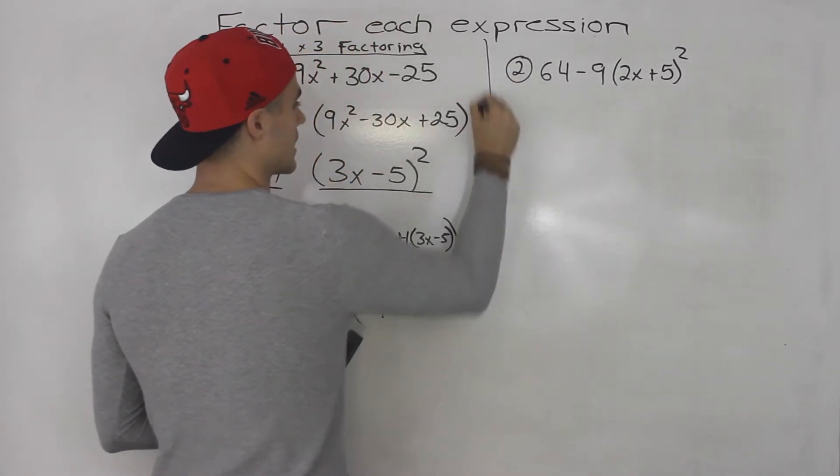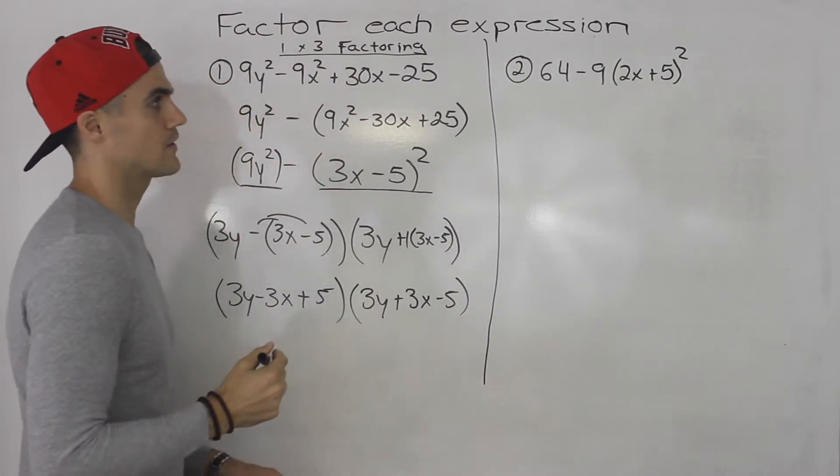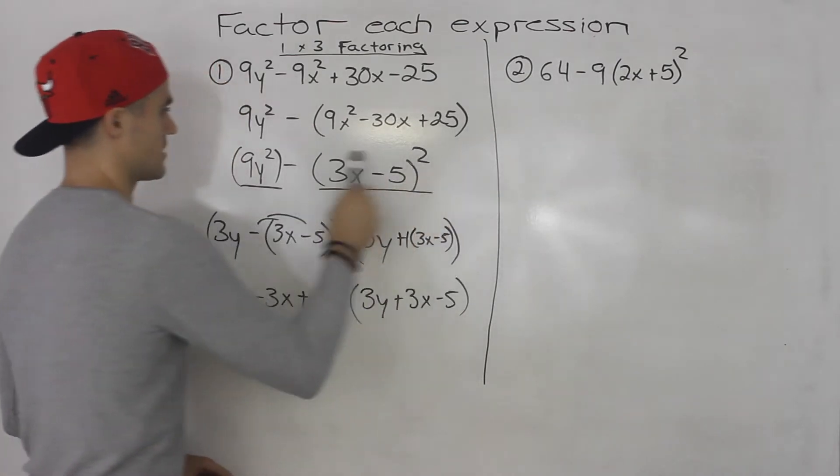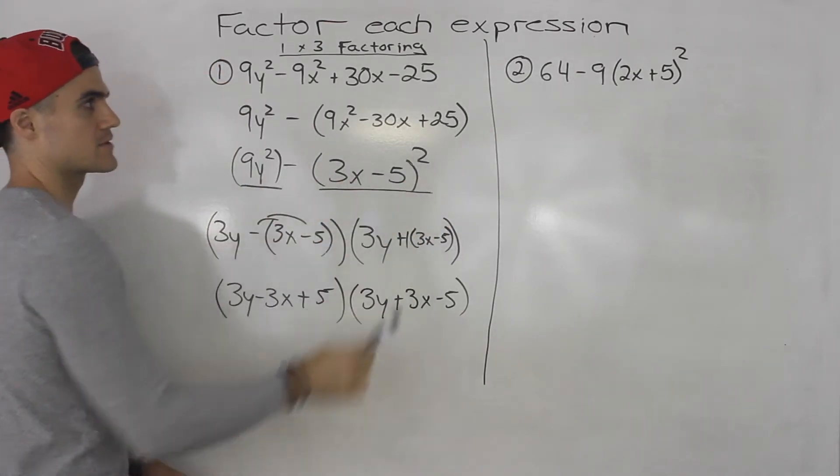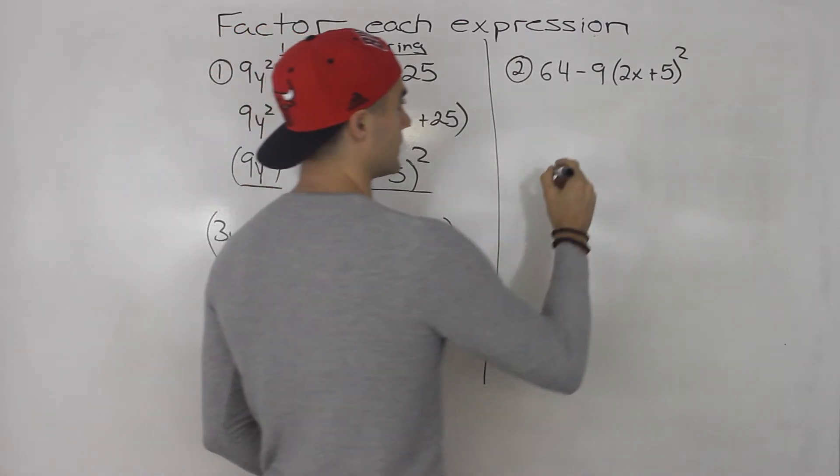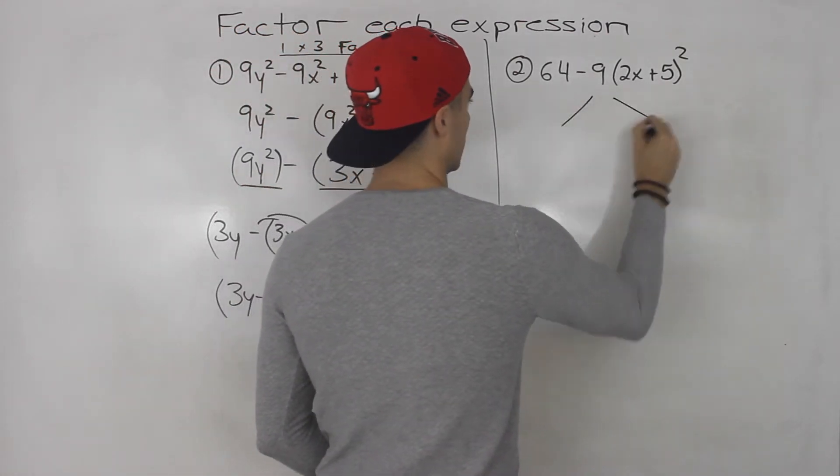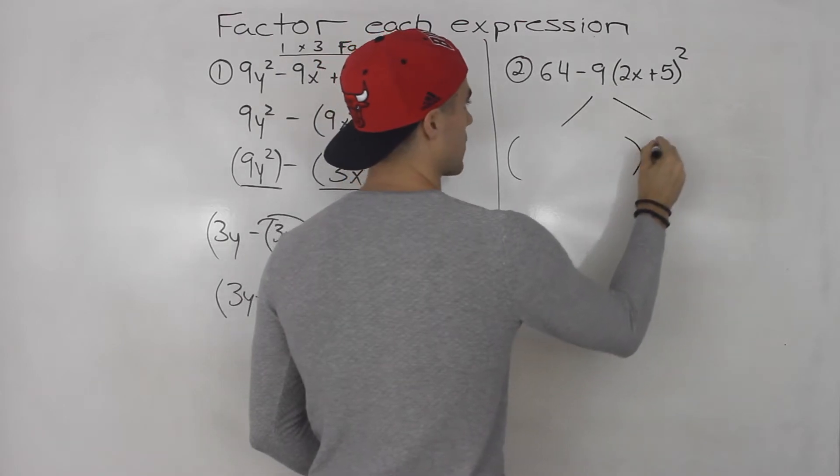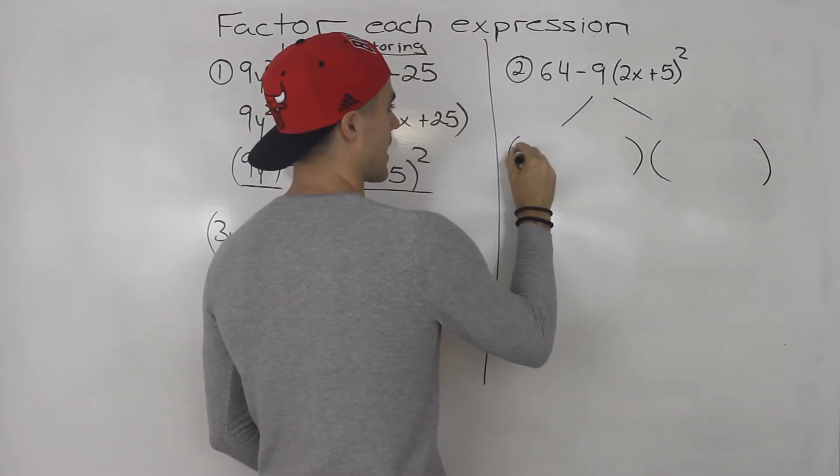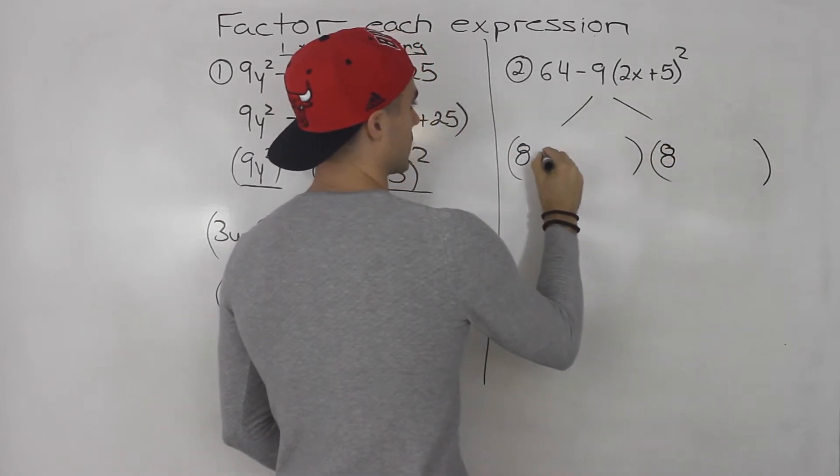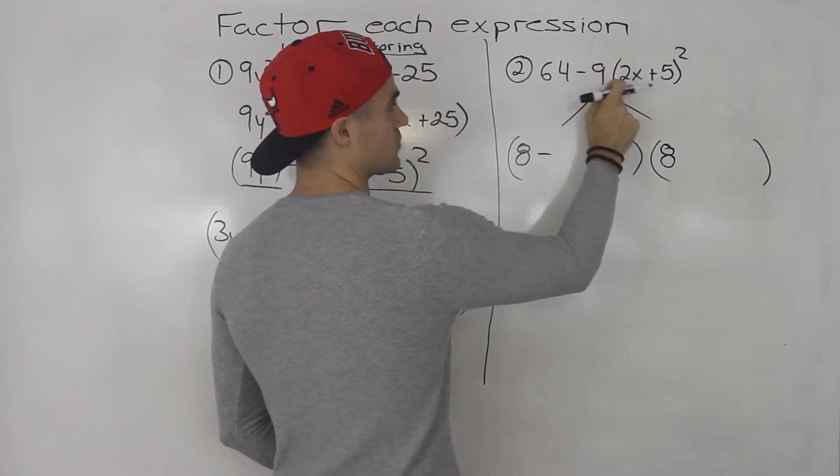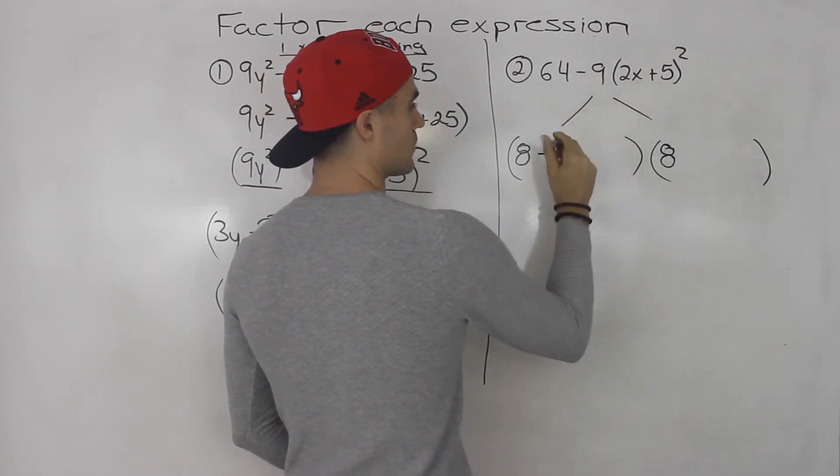Well, notice that this is already in this sort of format. So this is going to be a difference of squares. So we could factor this into two brackets. Square root of 64 is 8. And then we're going to be subtracting the square root of this.